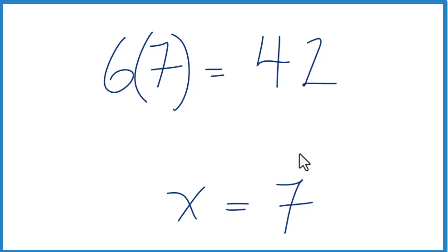When we find x in the equation 6x equals 42, x has a value of 7. This is Dr. B. Thanks for watching.